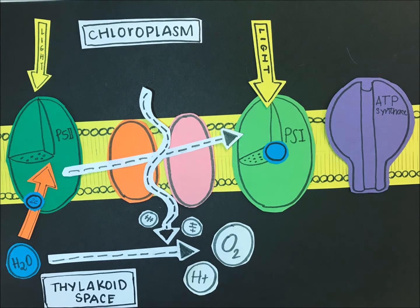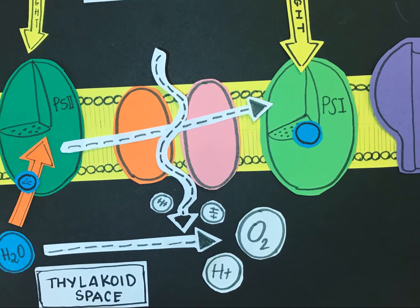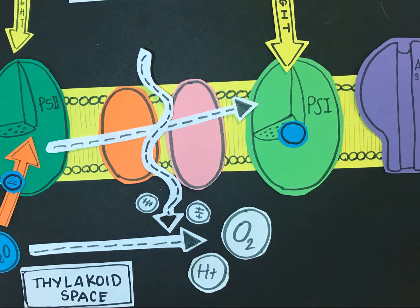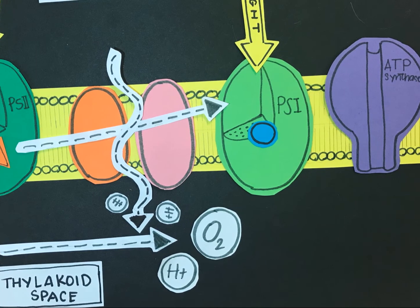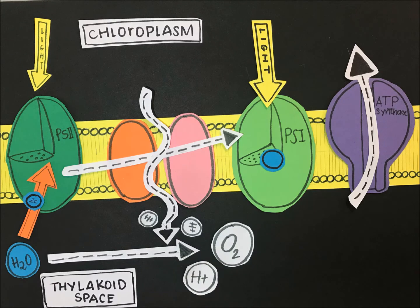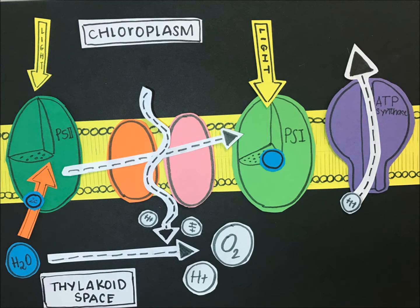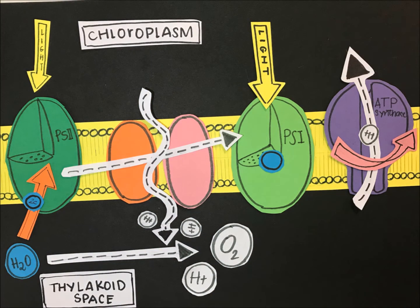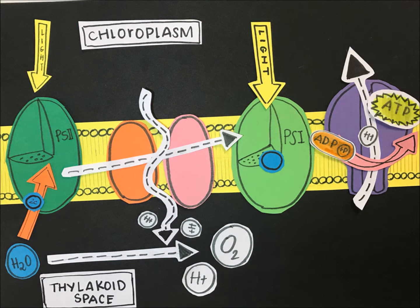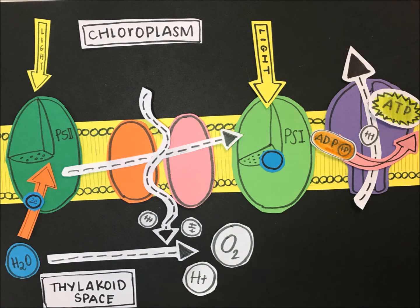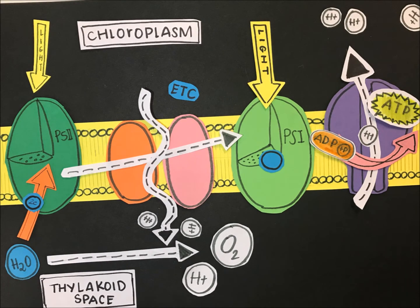Going back to photolysis, after water is broken down into two hydrogen ions, the protons proceed to the ATP synthase channel alongside other hydrogen ions that have been inside the thylakoid membrane. The protons provide the necessary energy to join the ADP molecule and the phosphate in order to form ATP, which will be used in the Calvin cycle. This process is called chemiosmosis.